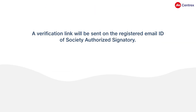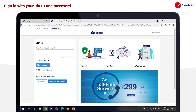A verification link will be sent to the registered email ID of the Society Authorised Signatory. Verify it within 24 hours. Now you can sign in with your G-O ID and password.